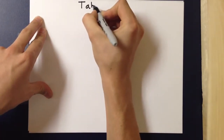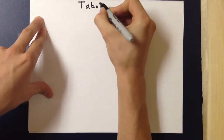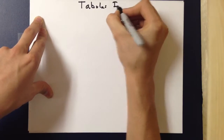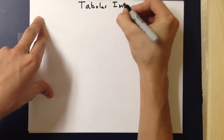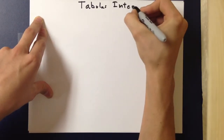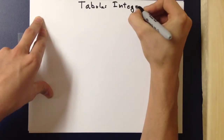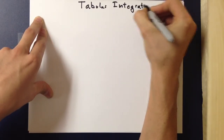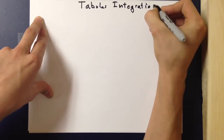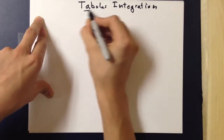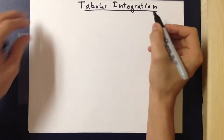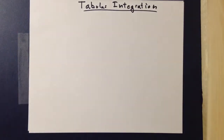In tabular integration, you must have two types of functions: one that does not derive to zero, and the other which does.